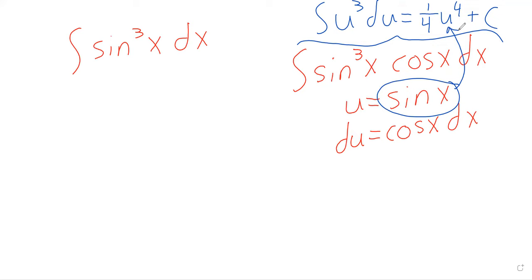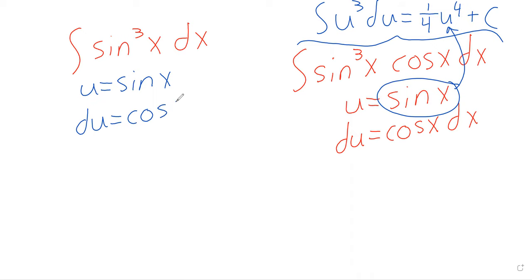That clearly doesn't work here. The issue is that because we don't have any cosines, we can't get back to du. So u-substitution, which worked last Thursday, doesn't work here.